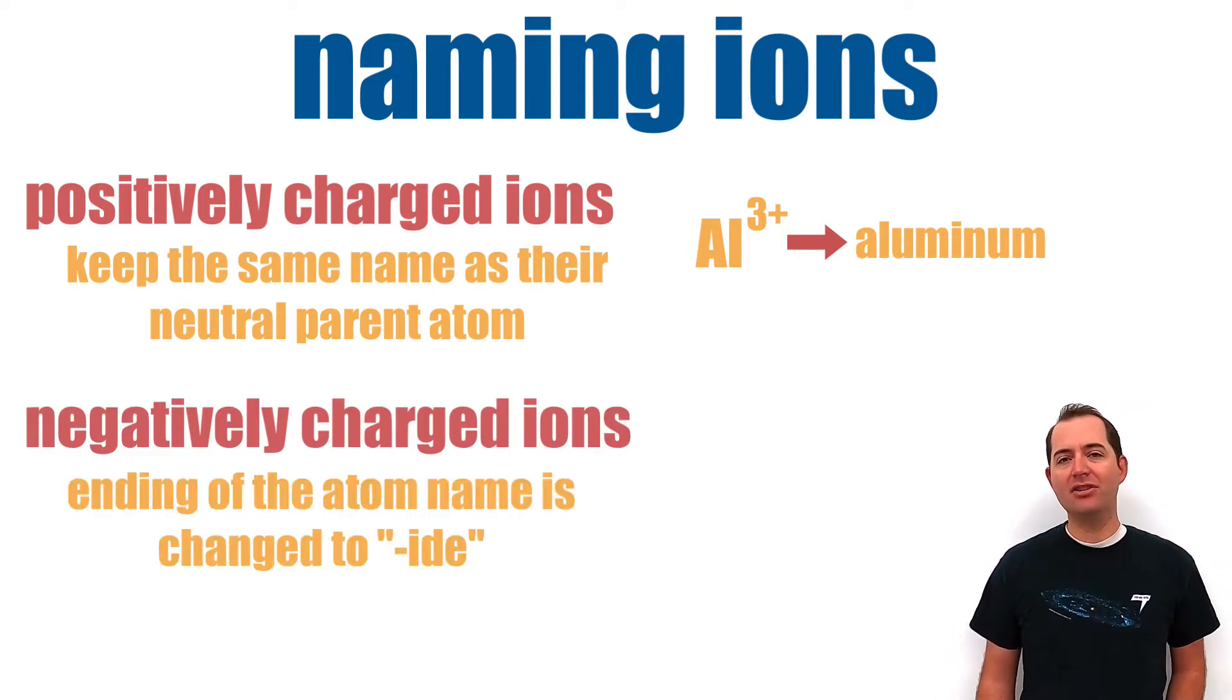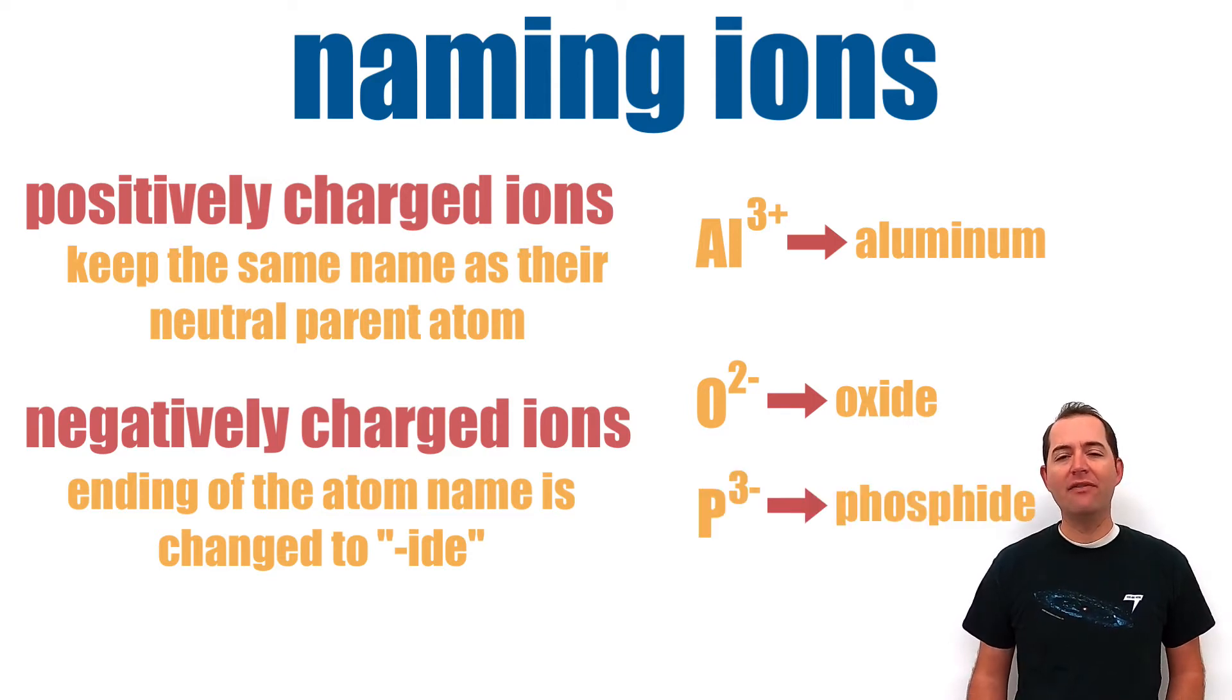Negative ions are named differently. When naming negatively charged ions, the ending is changed to "-ide." For example, a negatively charged oxygen ion is named oxide, and a phosphorus ion is named phosphide.